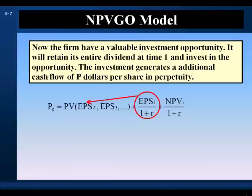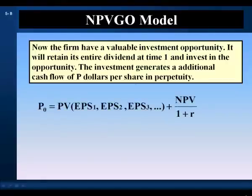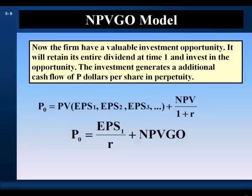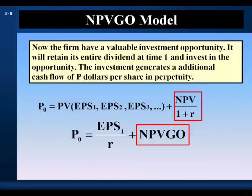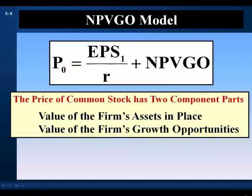We can put the present value of the earnings per share at time one back with the firm's stream of earnings per share. And we now have our Net Present Value of Growth Opportunity model. We have the value of our assets in place, and the time zero value of the project's net present value is the net present value of the growth opportunity. So the NPVGO model says the price of a common stock has two component parts: the value of the firm's assets in place, and the value of the firm's growth opportunities.